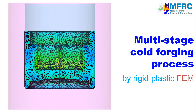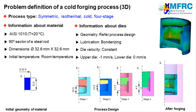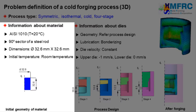Let's get started with the process type first. Since the geometries of the workpiece and the dies are symmetric, we will carry out a 3D simulation of a 90-degree sector of the component. The temperature change will not be considered in this simulation. The information about the material is given on the left side. The dimensions of the workpiece are as shown in the figure on the left.